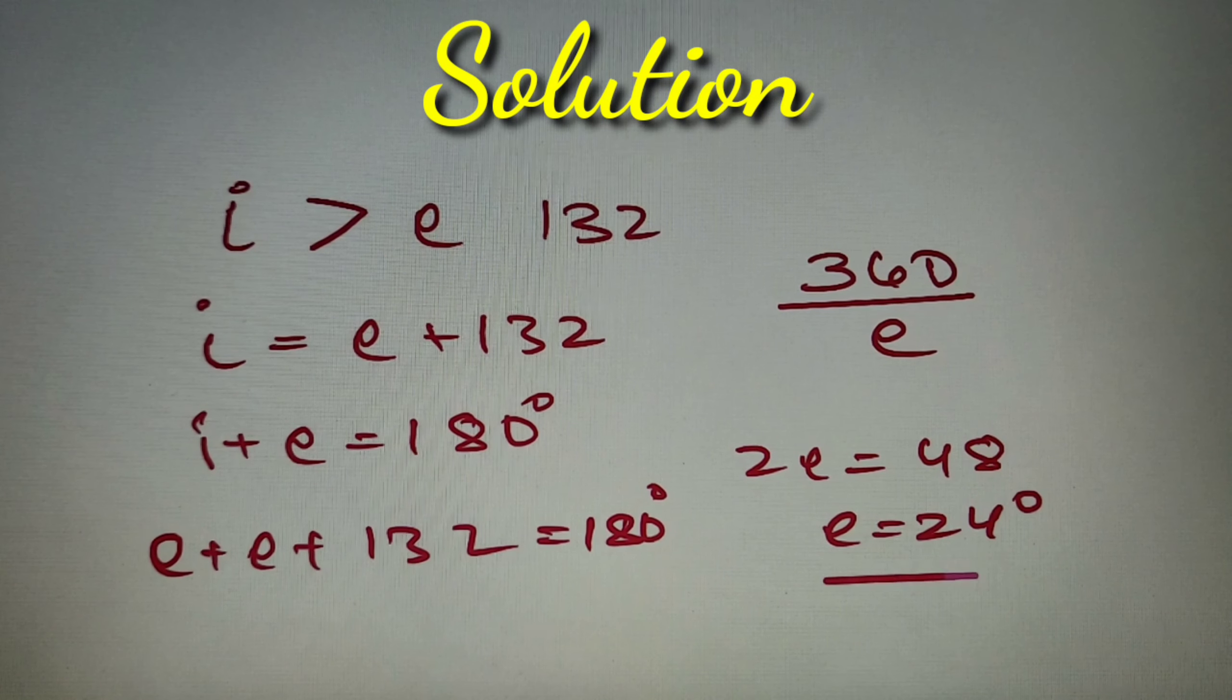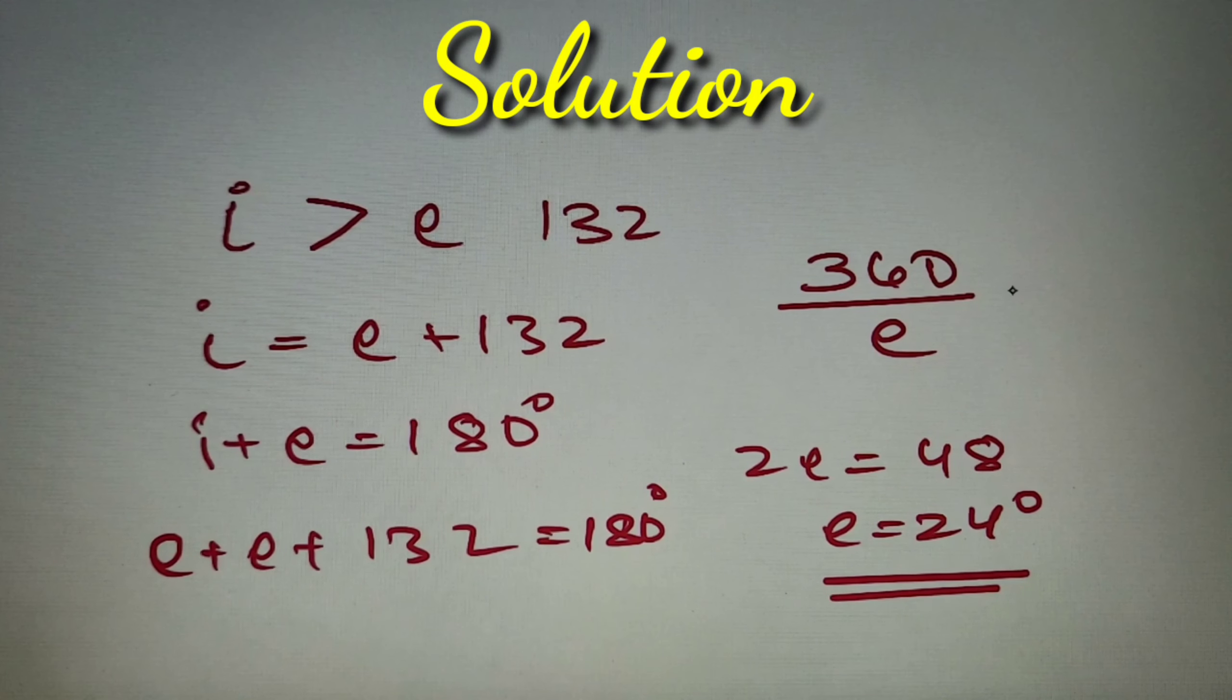So we have got that the value of the exterior angle is equal to 24 degrees. So according to our given question, the number of sides in the polygon is equal to 360 divided by 24, that will come as 15. So the number of sides in the question is equal to option D: 15.